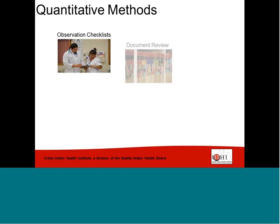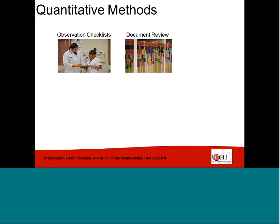Another method is document review, which is the process of collecting and reviewing existing documents, gathering information about the organization's activities and the population being served. Document reviews can help track changes for identified indicators in existing records, such as changes in health status, and can also track other information such as the number of visits. Document reviews can also include content analysis of emails or meeting minutes to identify whether activities and processes related to program implementation were actually accomplished.